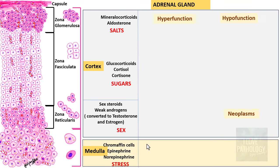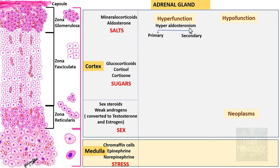Moving on to the pathology of the Adrenal Gland, we can study the pathology of the Adrenal Cortex under three headings: hyperfunction, hypofunction, and adrenocortical neoplasms. Hyperfunction of mineralocorticoids is referred to as hyperaldosteronism. Hyperaldosteronism can be primary or secondary. Primary hyperaldosteronism can be idiopathic, due to neoplasms, or due to familial causes.